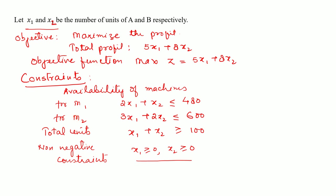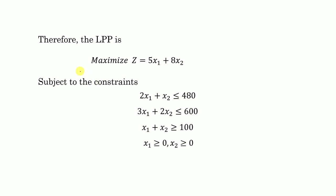In this way we can formulate the given problem into a linear programming problem. The final LPP is: maximize z = 5x1 + 8x2, subject to the constraints: 2x1 + x2 ≤ 480, 3x1 + 2x2 ≤ 600, x1 + x2 ≥ 100, x1 ≥ 0, and x2 ≥ 0. This is the final formulation of the linear programming problem.